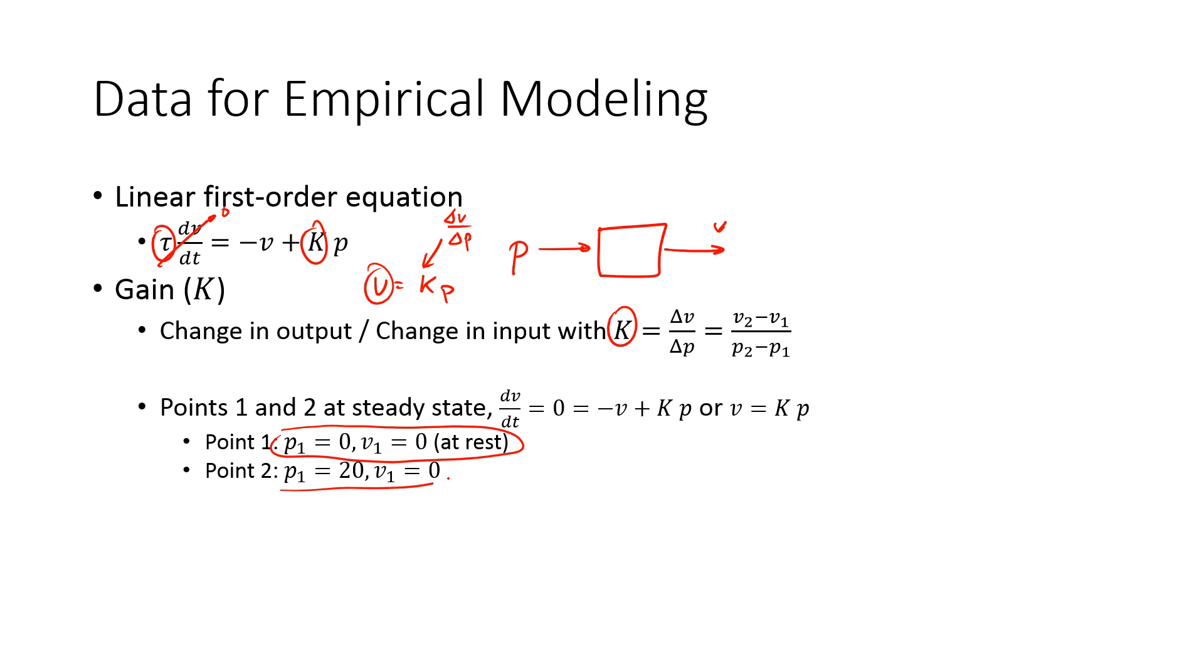And then let's say p2 is 0.2, let's just say 0.2 is 20. And let's do v2 is also going to be 20. Then that means we would be a gain of 1.